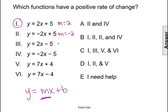The third function has a slope of 2 because of the coefficient of x. So that slope of 2 is a positive slope, which means that function 3 has a positive rate of change.